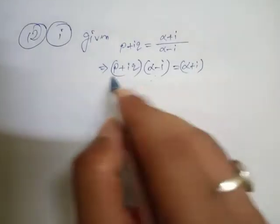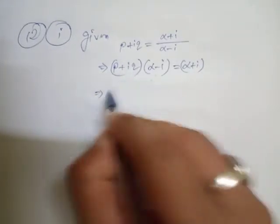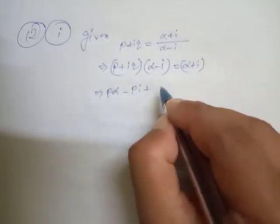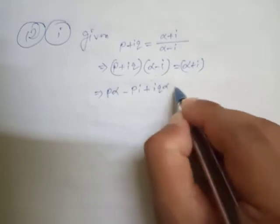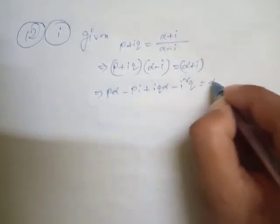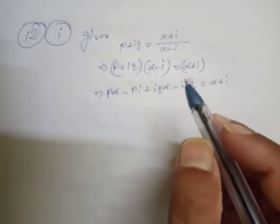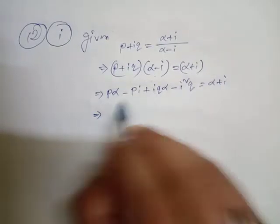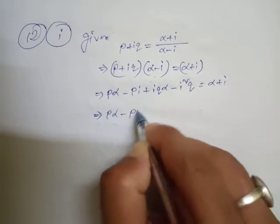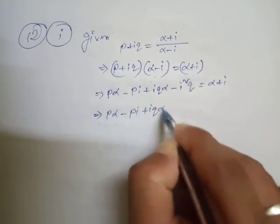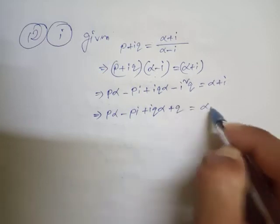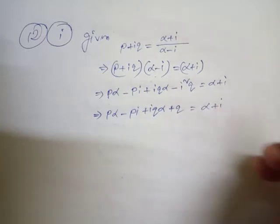Now if we multiply here: pα - pi + iqα - i²q = α + i. After that, pα - pi + iqα - i² is minus one, so minus(-1) gives +q, therefore pα - pi + iqα + q = α + i.